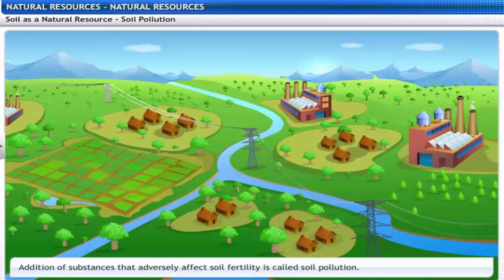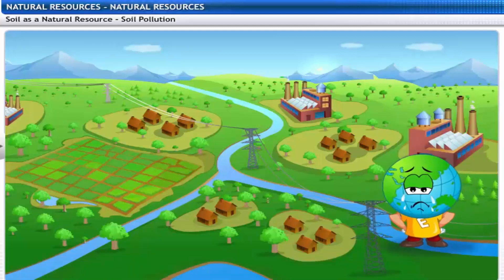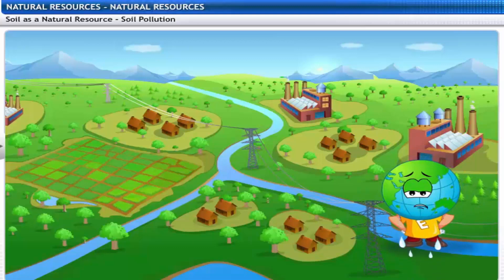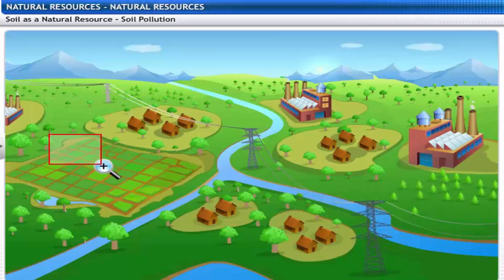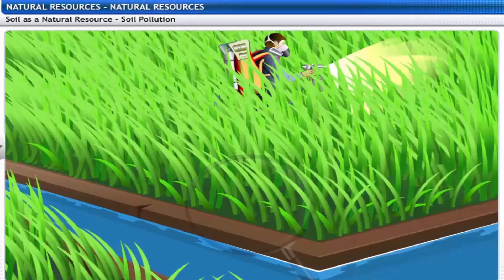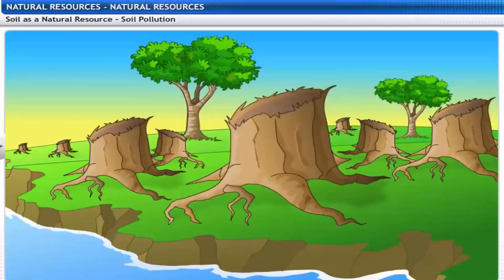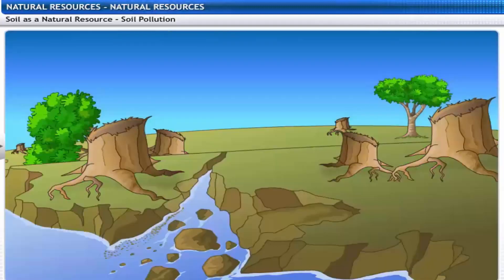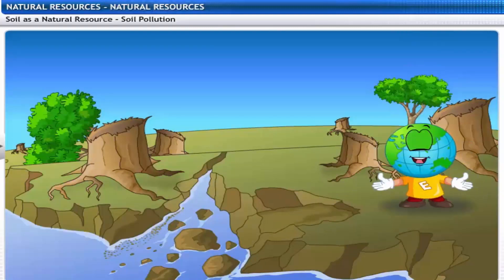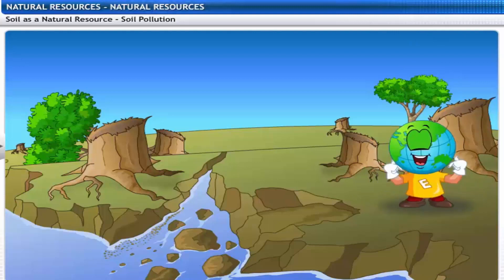The addition of substances that adversely affect soil fertility is called soil pollution. It seems we didn't spare soil too. How did we do it? Use of fertilizers and pesticides destroy soil structure by killing microorganisms and earthworms. Deforestation leads to soil erosion. Fine particles of soil are also carried away by water and wind. Soil forms very slowly. Around 1 cm of soil is formed in 500 years. It is important to conserve soil.